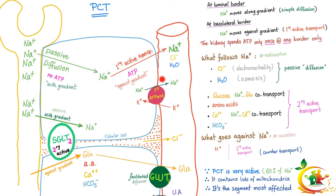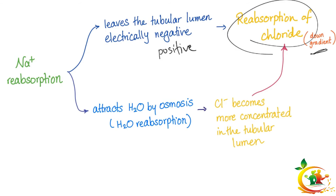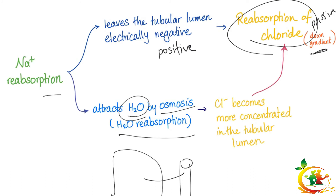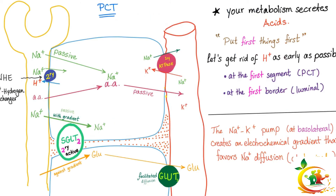Sodium is amazing. First, sodium leaves the tubular lumen — it's electrically positive, so it attracts electrically negative chloride, aiding in chloride reabsorption down the gradient passively. Second, sodium reabsorption attracts water by osmosis, leading to water reabsorption. When water flows from the tubular cell to the peritubular capillary, it leaves chloride more concentrated in the tubule, so chloride can then flow down its own concentration gradient — a beautiful cascade of reabsorption.